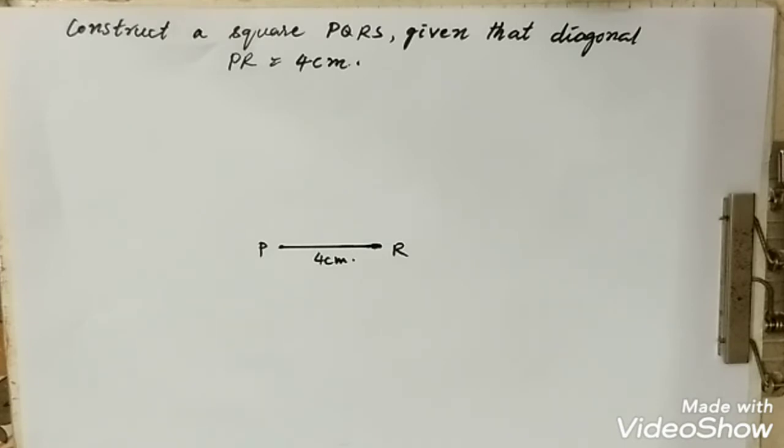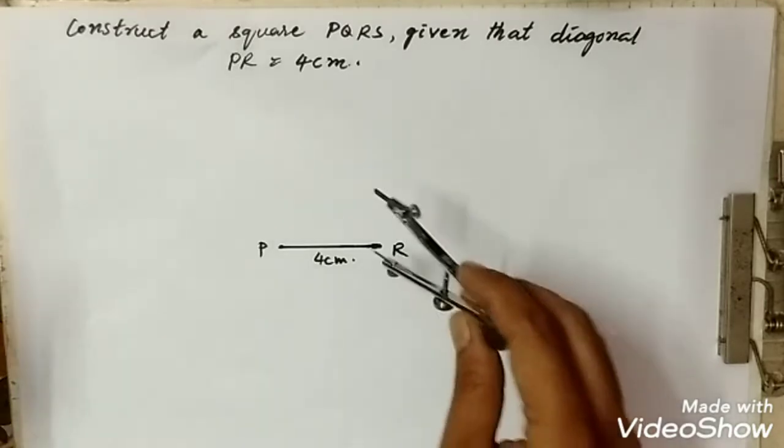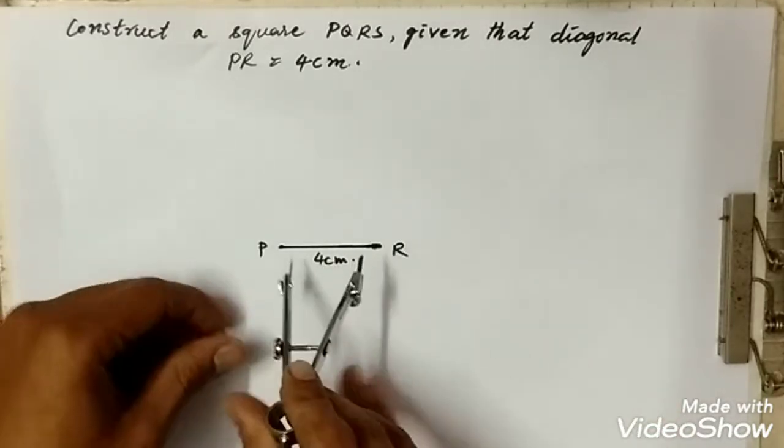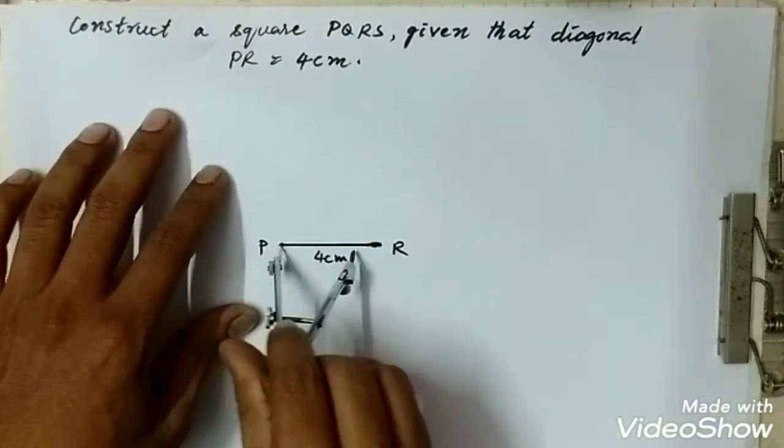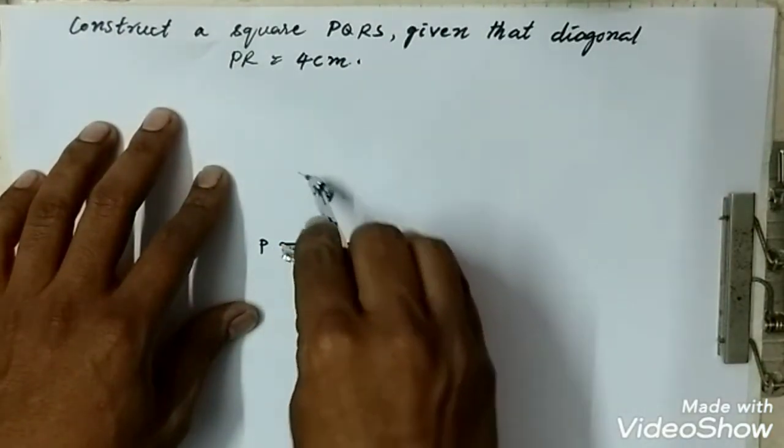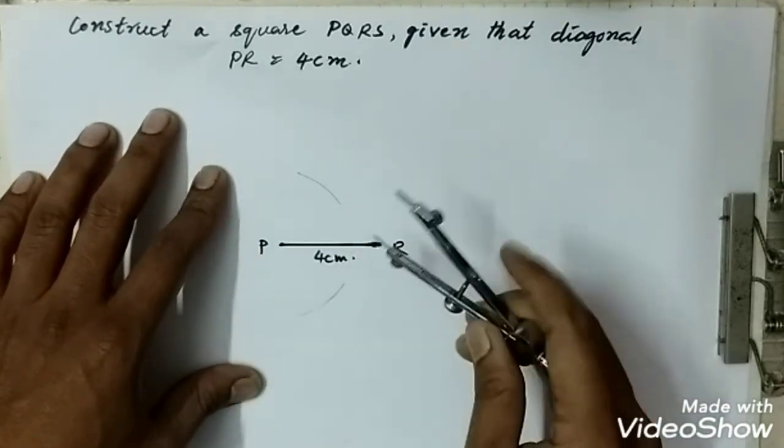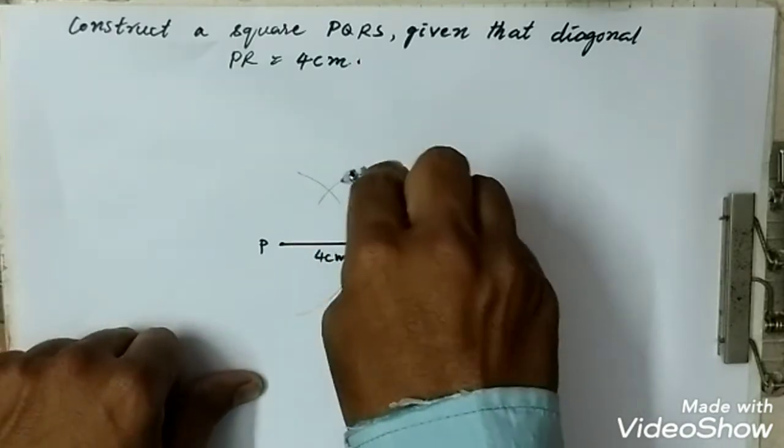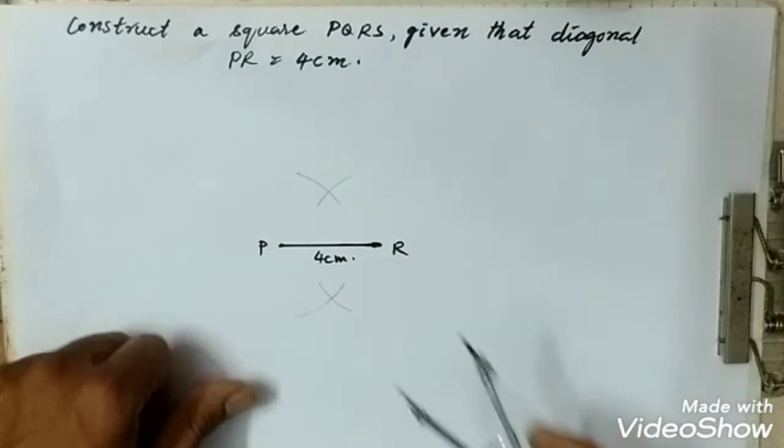First you need to cut this PR into two equal parts. For that, you take more than half distance from point P, then draw an arc over here, then down set one arc. Then from another point, that is from R, draw another arc like this. Cut this another arc in the downside.